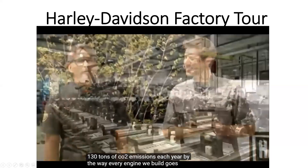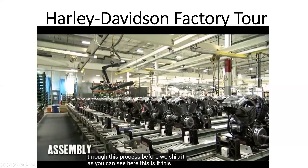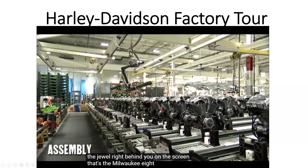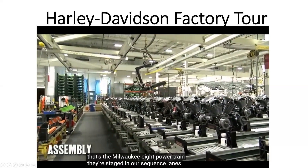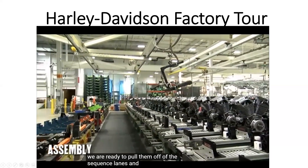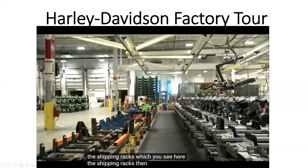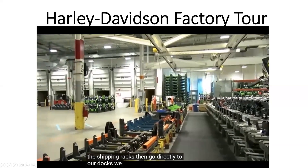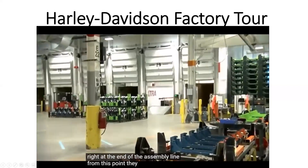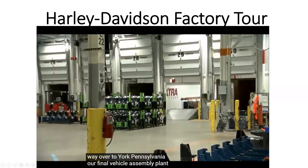Every engine we build goes through this process before we ship it. This is it — this is the Milwaukee 8 powertrain. They're staged in our sequence lanes, and we are ready to pull them off the sequence lanes and add them into the shipping racks. The shipping racks then go directly to our docks located right at the end of the assembly line. From this point, they will travel all the way over to York, Pennsylvania — our final vehicle assembly plant.